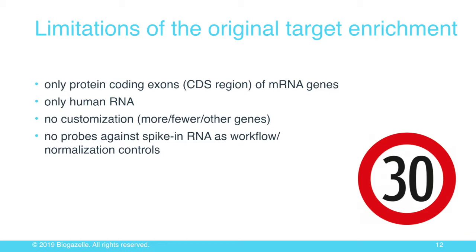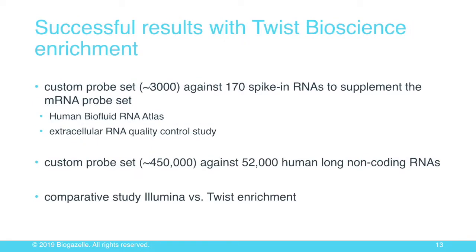In the next part of my presentation I want to illustrate three or four success cases where we used Twist Bioscience probes to accommodate some of these challenges. The first is a custom probe set of about 3,000 probes against 170 spike-in RNAs to supplement the messenger RNA probe set, applied to the Human Biofluid RNA Atlas and an ongoing extracellular RNA quality control study. Then a custom probe set of about 450,000 Twist probes against 50,000 human long non-coding RNAs, finishing with a benchmarking study comparing Illumina enrichment with Twist enrichment.